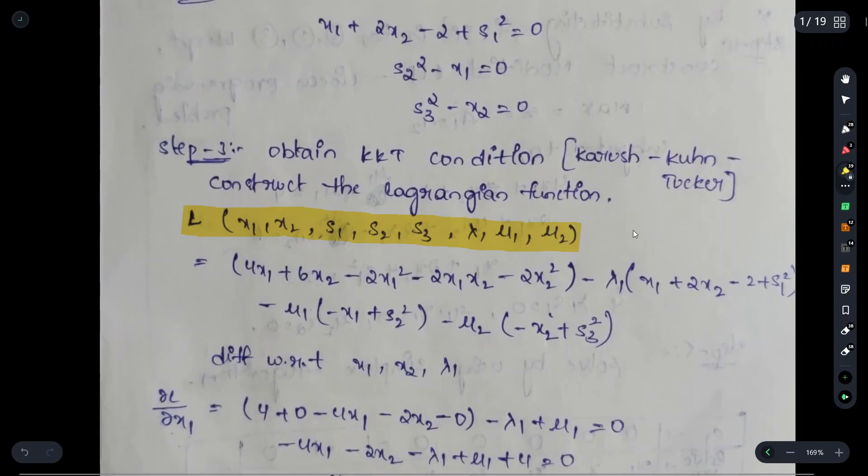Then in the third step, why we write these L values is because it plays a crucial role in the case of simplex method. We cover this basic concept before doing simplex method. If we write it now, it's better for understanding later. So x1, x2, s1, s2, s3, lambda, mu1, mu2 - these are the values we have now.